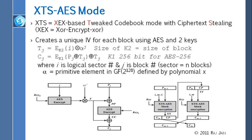This mode has all those features: it has AES, it has tweaking, it has Exclusive-OR, Encrypt, Exclusive-OR, and it has cipher text stealing. Basically the way it works is that you take a primitive element in Galois field 2 raised to 128, which is defined by the polynomial X.